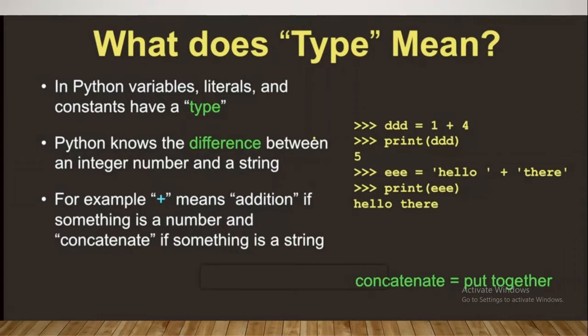Whereas if you assign variable ee with a string called 'hello' plus 'there', hello is enclosed with a single quote and there is enclosed with a single quote. When you add this, Python has knowledge that this is a string, so it concatenates. You just add them together and write it as 'hello there'. That's what it means.